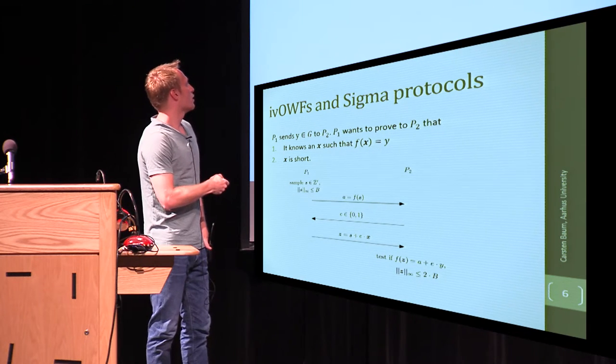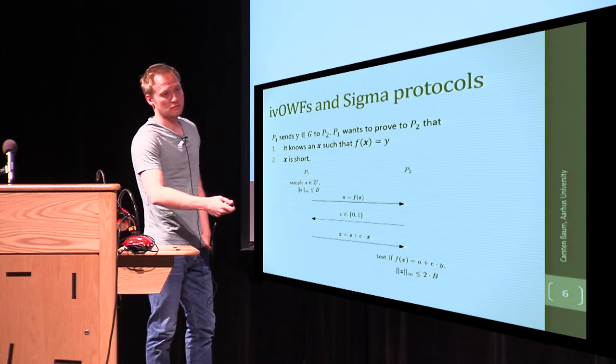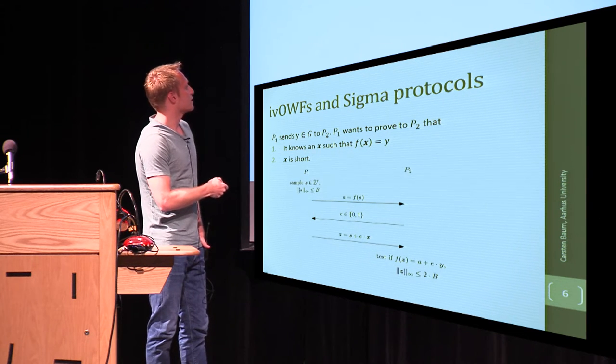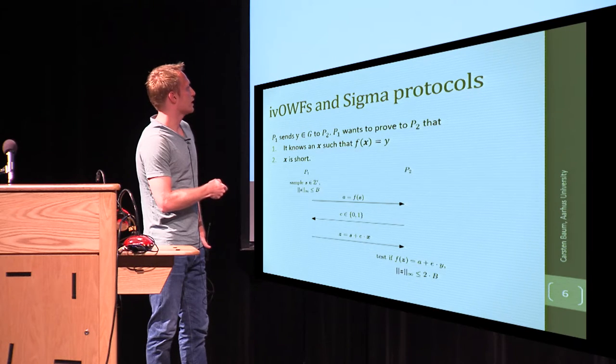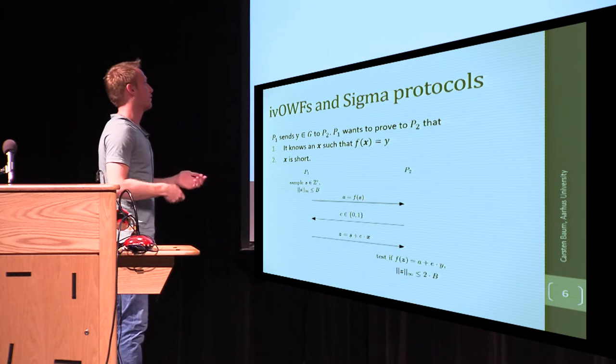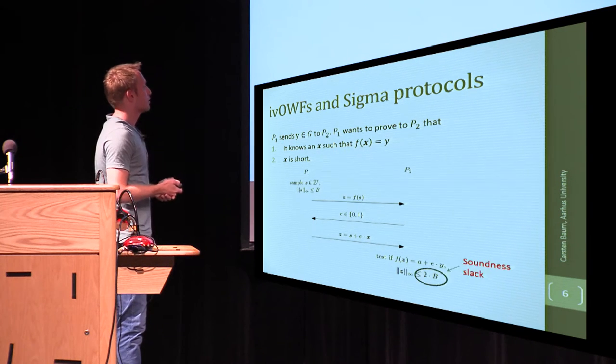He flips a bit and says, well, either show me that this value here was good, so send it to me if E is 0, or if E is 1, send me the sum of the two values S and X, where X is the element you want to prove shortness of. So it's a typical sigma protocol.